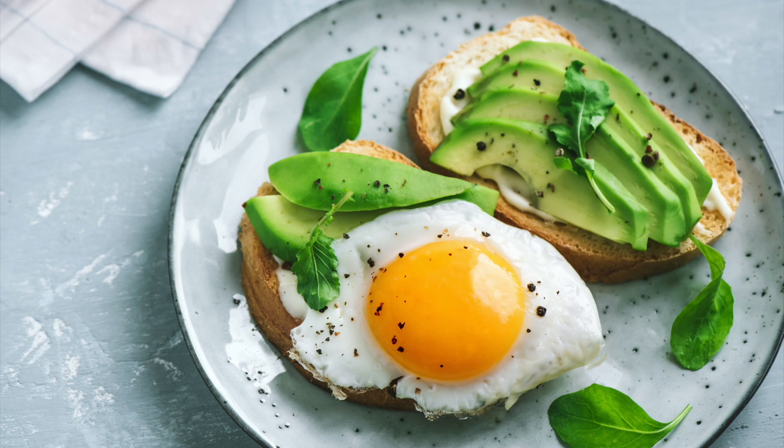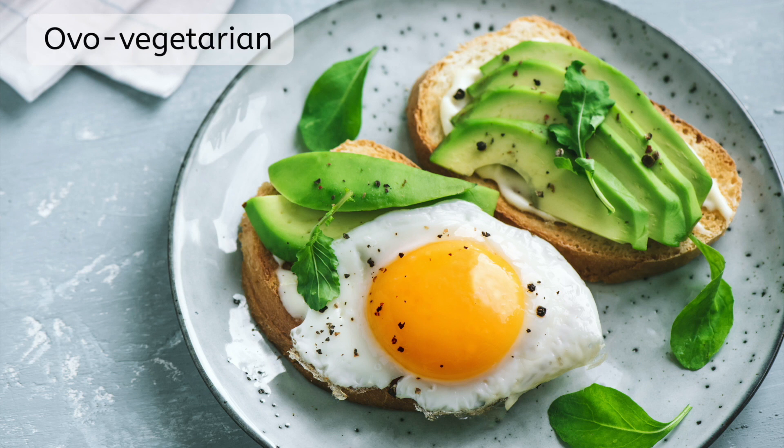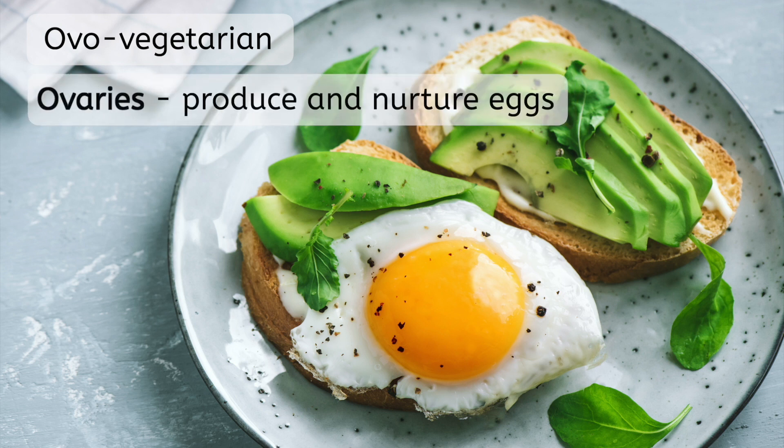Do you know any vegetarians who don't eat meat but do eat eggs? They would be called an ovo-vegetarian. Are you familiar with the organ of the ovary in animals? It is the organ that produces and nurtures the eggs that then become fertilized in reproduction. As we know, in biology, prefixes can tell you a lot about a word. Looking at these two examples, can you guess what the prefix ovo means? The prefix ovo means egg. What if I told you that birds are oviparous? It means that birds reproduce by laying eggs.